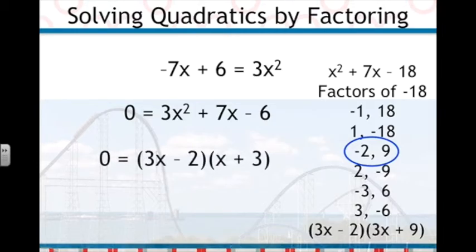0 equals 3x minus 2 times x plus 3. 3x divided by 3 was the x, and the plus 9 divided by 3 gave us the plus 3.